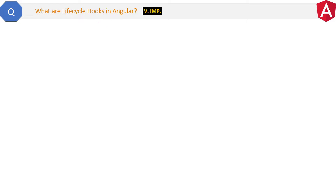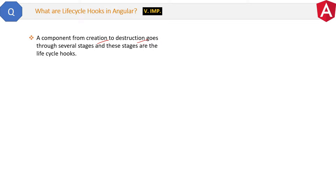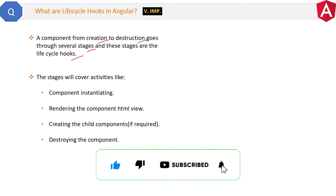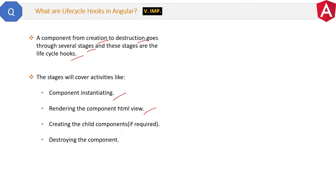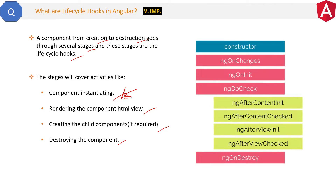Here is the question: What are lifecycle hooks in Angular? This question is very important and is asked in many interviews. A component from creation to destruction goes through several stages, and these stages are the lifecycle hooks. These stages cover activities like component instantiating, rendering the component HTML view, creating child components if required, and finally destroying the components. As a developer, we need lifecycle hooks because we might want to add some behavior when a component is instantiating. Here is the list of hooks provided by Angular — you can code inside them to change component behavior at any point in time.